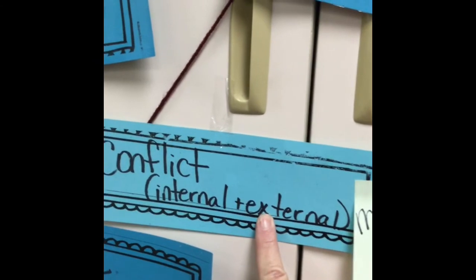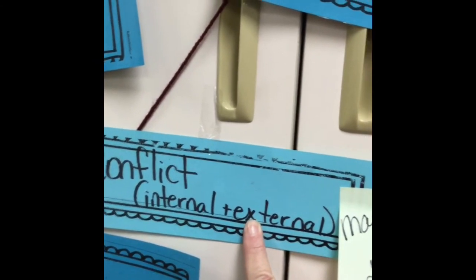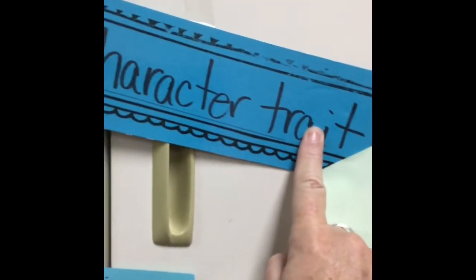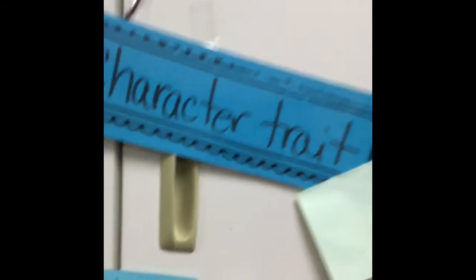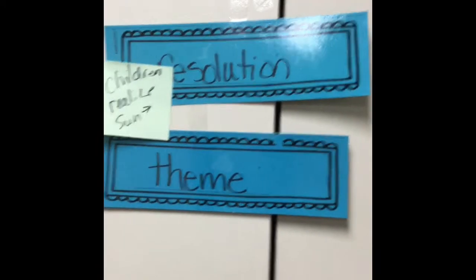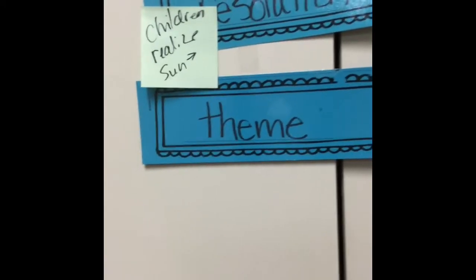You're looking for the conflict, the exact words that the author used to show it. You're looking for something that lets the reader know the character trait that Margo is shy. Now I'm going to move to the end of the story that we read. The resolution is directly tied to the conflict.